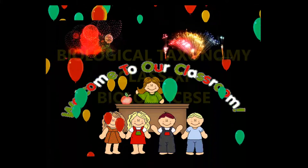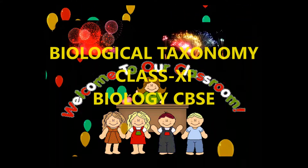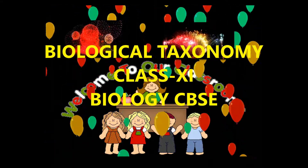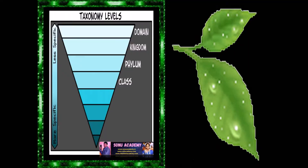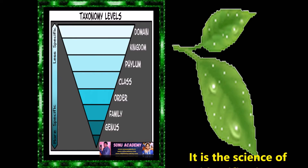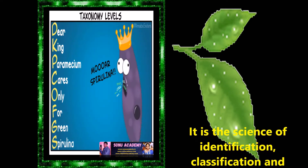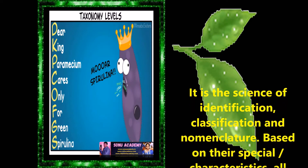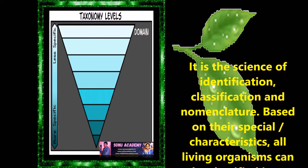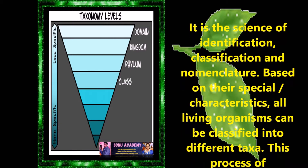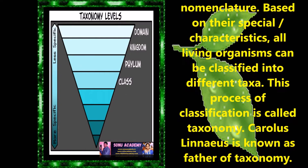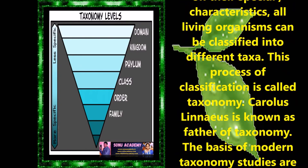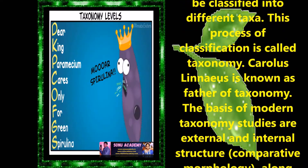Hi friends, my name is Nandita. I am from Andhra Pradesh. Children, now let us discuss about Taxonomy. Taxonomy is the science of identification, classification and nomenclature. As already discussed, based on their special characteristics, all living organisms can be classified into different taxa. The process of classification is called Taxonomy.